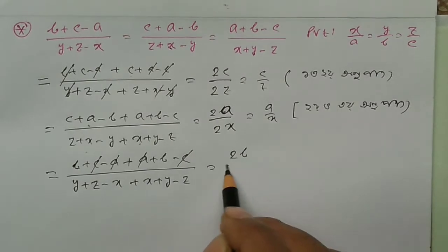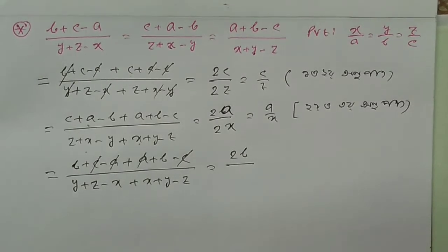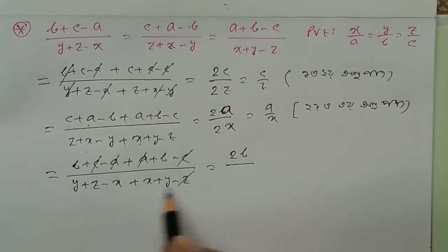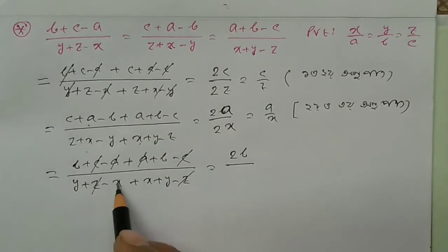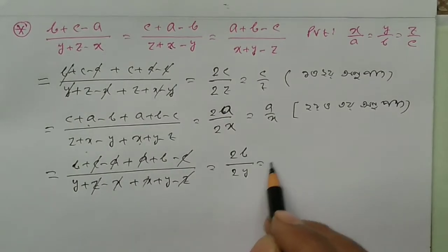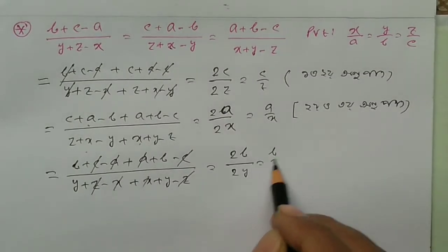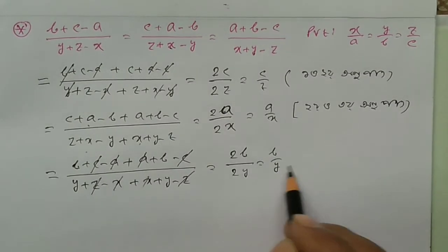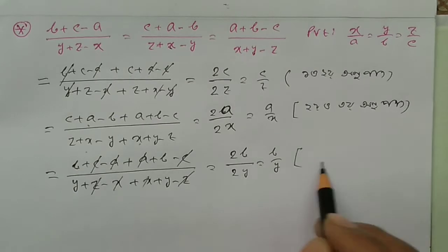This simplifies to 2B by 2Y, which equals B by Y.